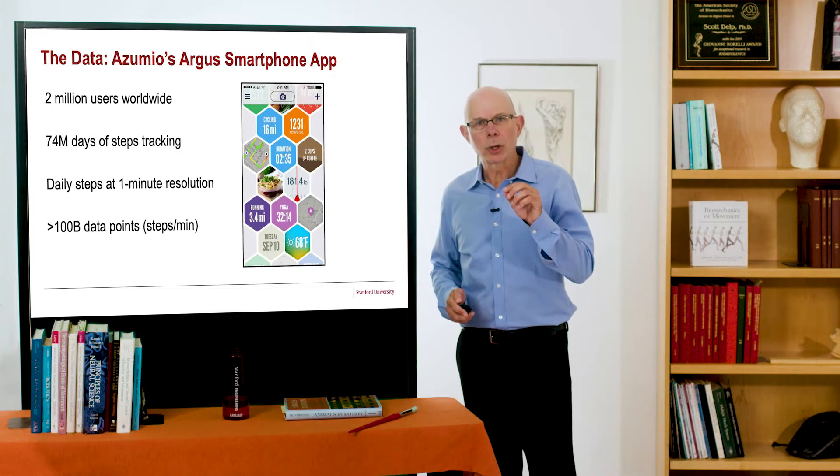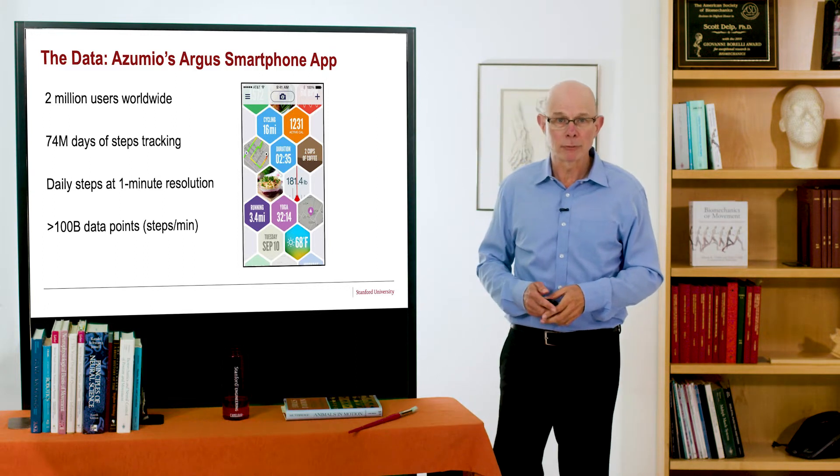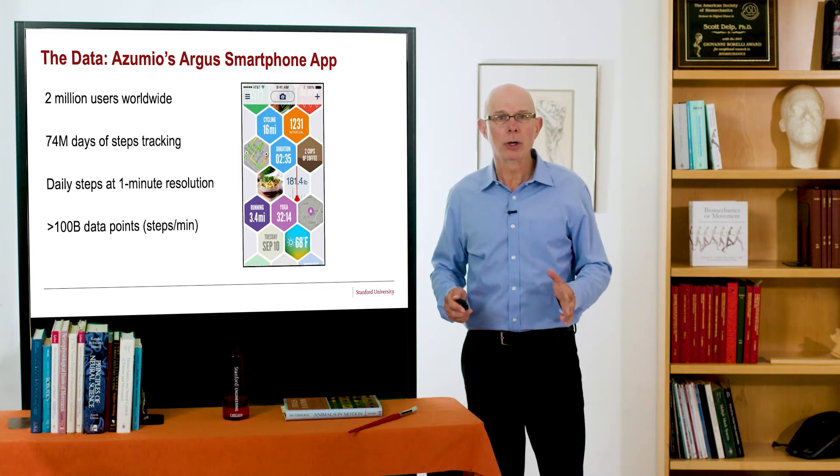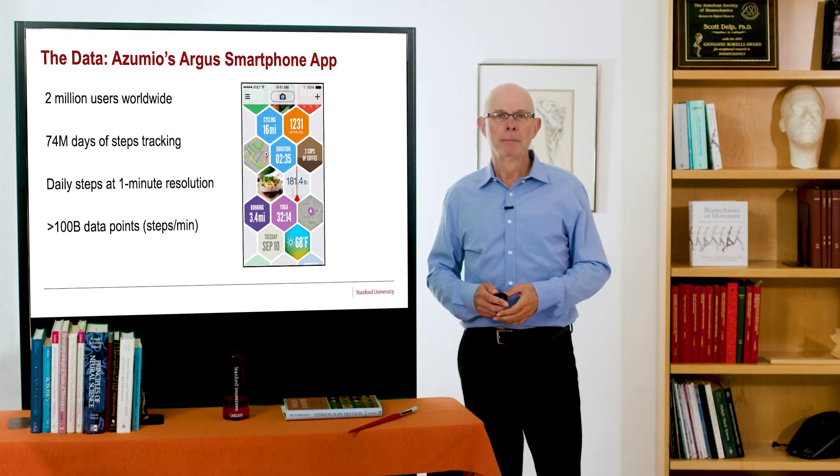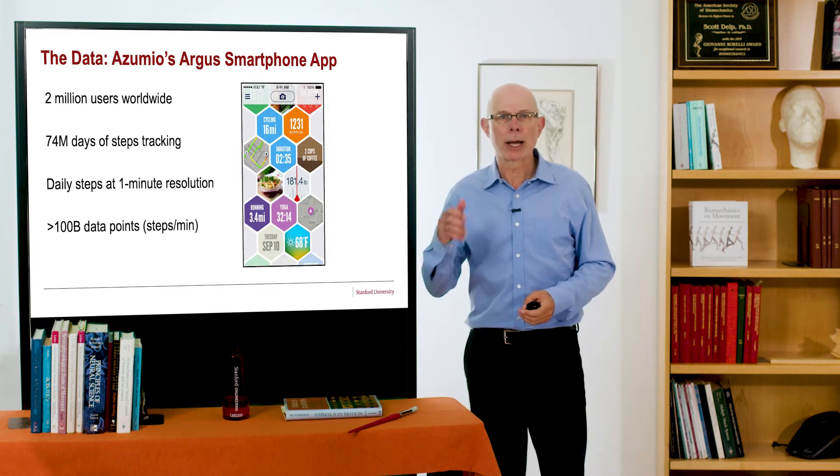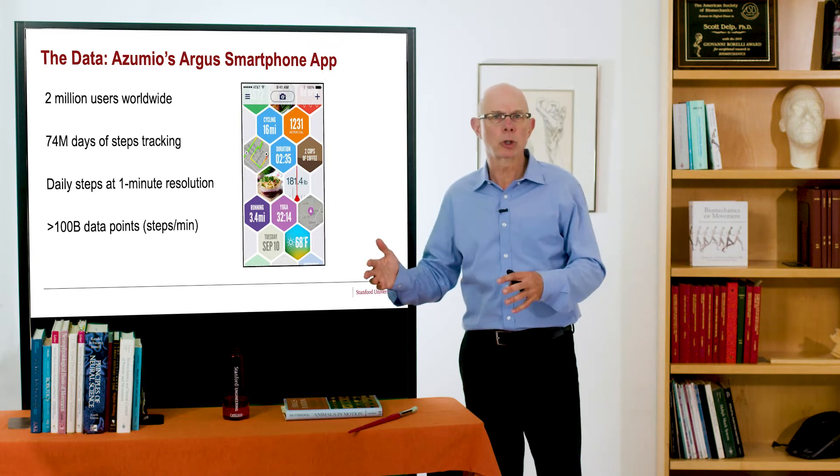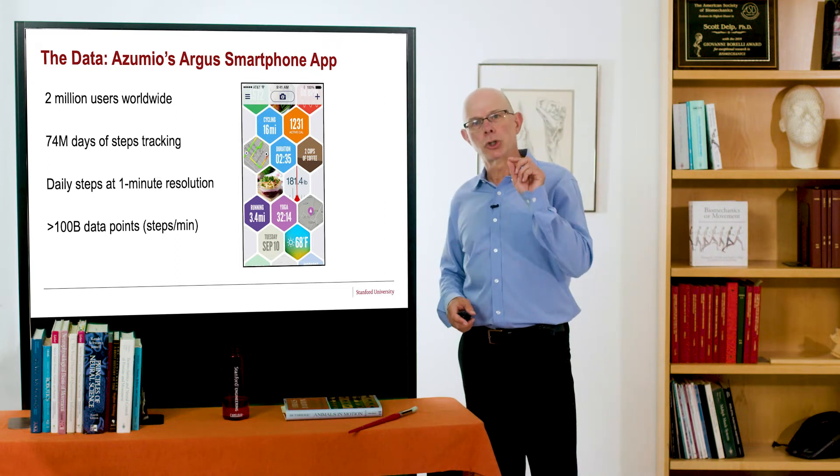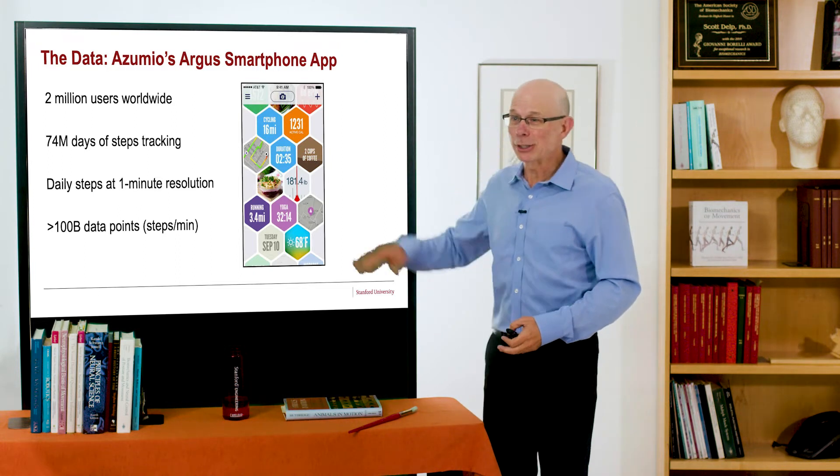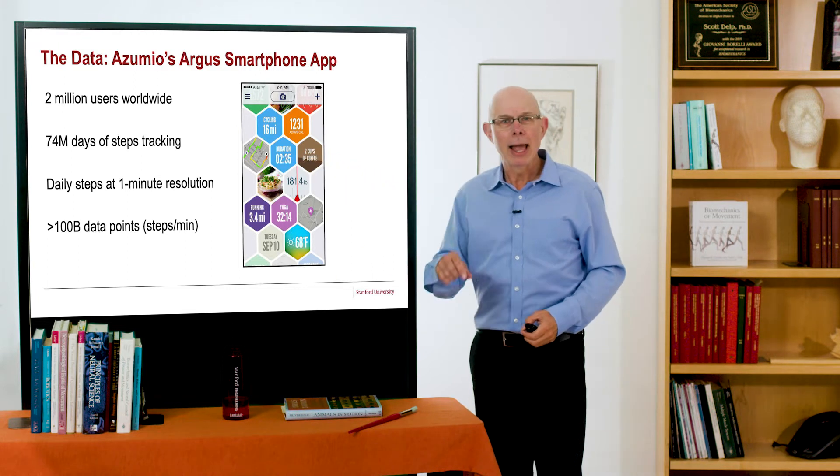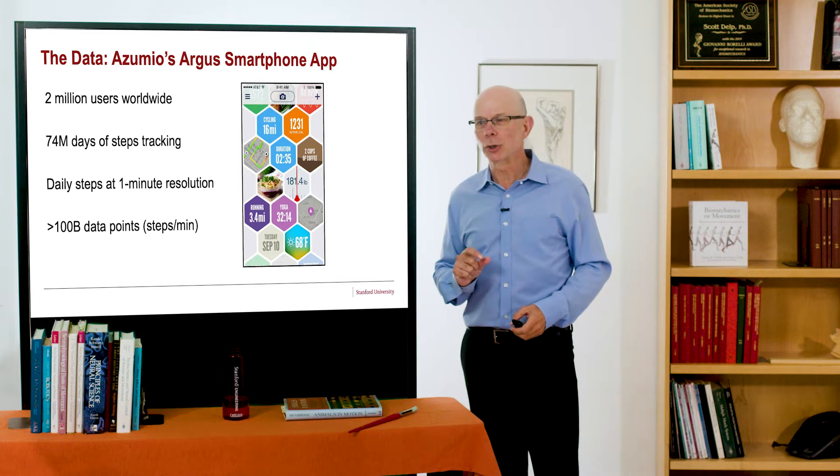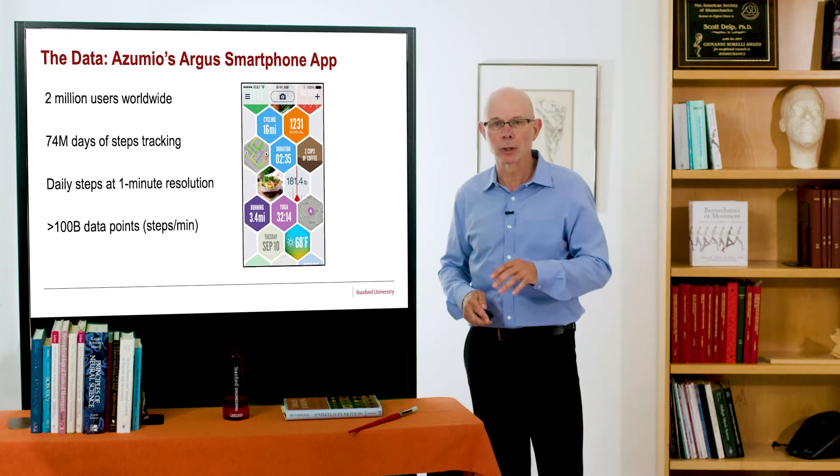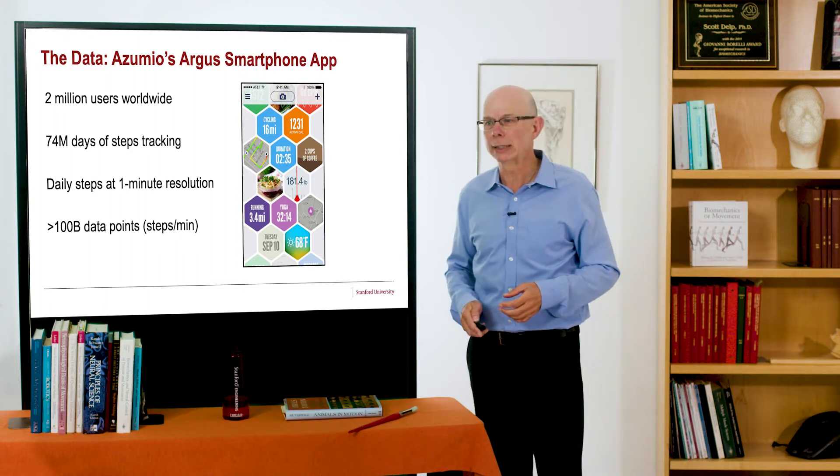I'll answer that question with a focus on data from a smartphone app developed by a company called Azumio. Azumio shared with us anonymized data for nearly 2 million users of their Argus smartphone app. The app allows users all over the world to track steps and other exercises, weight, social activity, heart rate, and other things. For this analysis, I'll show you data from 74 million days of step tracking, captured at one minute resolution. There are about 100 billion data points. We're very lucky to have this connection with Azumio that openly shared this data set with us.